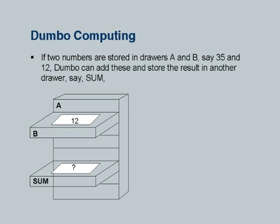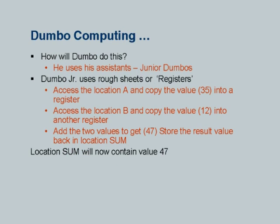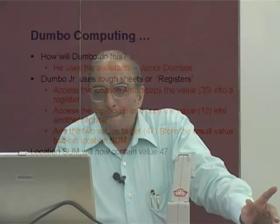Then we describe Dumbo's computing. If two numbers are stored in drawers A and B, Dumbo can add these and store the result in another drawer called 'sum.' We show by example: B has a value, sum we don't know — demonstrated by a question mark. We instruct him by saying 'sum = a + b.' Dumbo starts thinking and uses his assistants — we call them junior Dumbos — where actual arithmetic is done. He accesses location A, copies the value into a register, accesses location B, copies it into another register, calculates the sum, and stores the result back in location 'sum.' I felt the need for a simple animation to demonstrate this concept, which I have built and will show later.